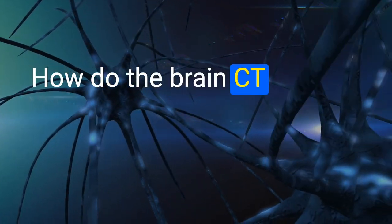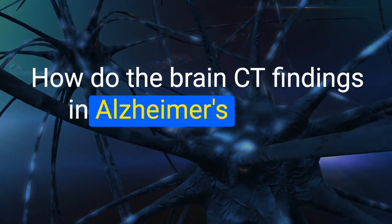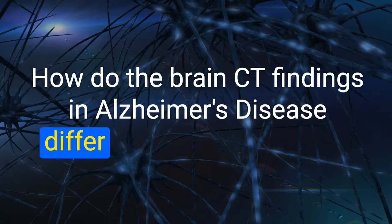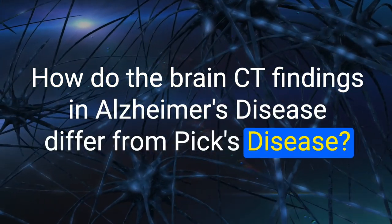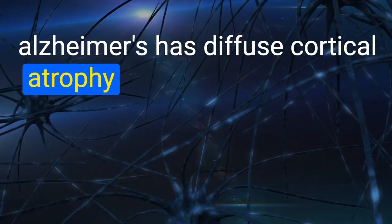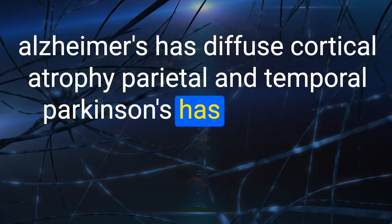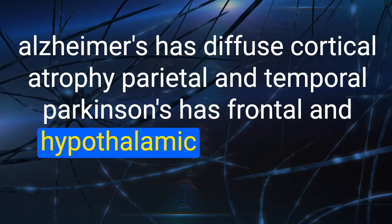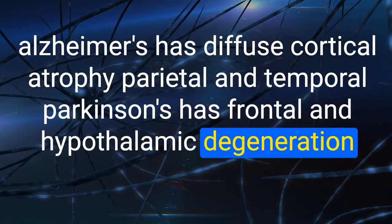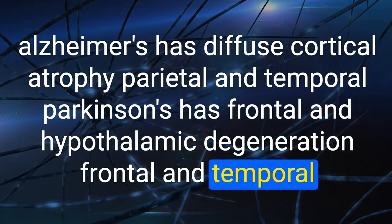10. How do brain CT findings in Alzheimer's disease differ from Pick's disease? Alzheimer's has diffuse cortical atrophy, parietal and temporal. Pick's disease has frontal and temporal degeneration.